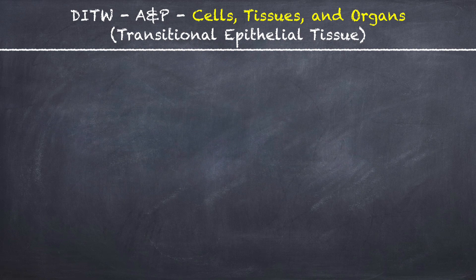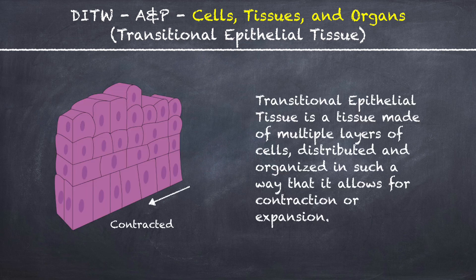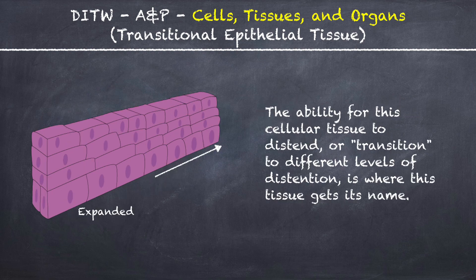This is DITW Anatomy and Physiology and you are watching the video on Transitional Epithelial Tissue. Transitional epithelial tissue is a tissue made of multiple layers of cells, distributed and organized in such a way that it allows for contraction or expansion. The ability for this cellular tissue to distend or transition to different levels of distension is where this tissue gets its name.